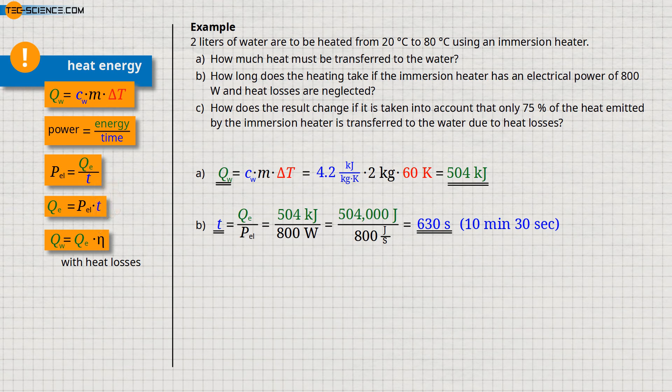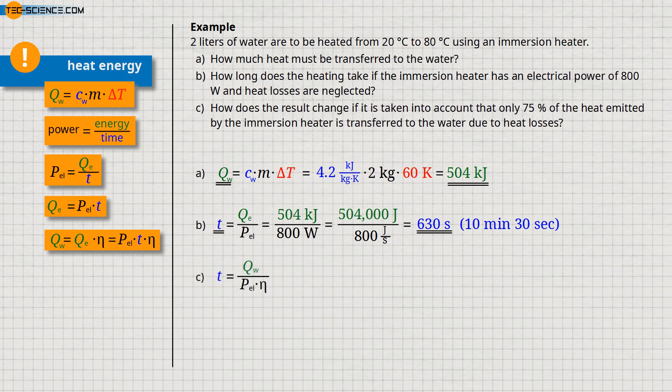Replacing the heat emitted in this formula by the product of the electrical power of the immersion heater and time, we obtain the shown formula for the heat actually transferred to the water. Finally, by solving this formula with respect to time, we obtain the heating duration taking into account the heat losses.